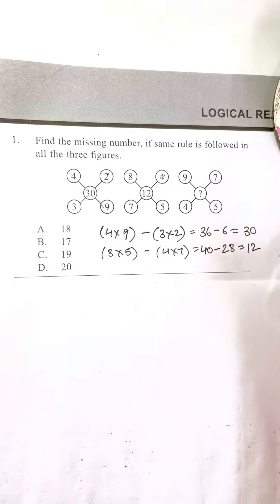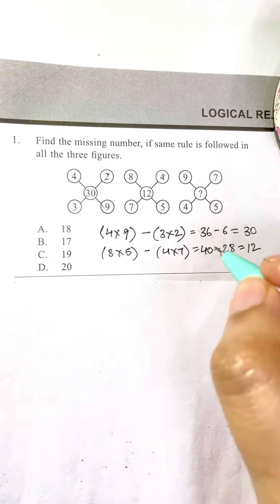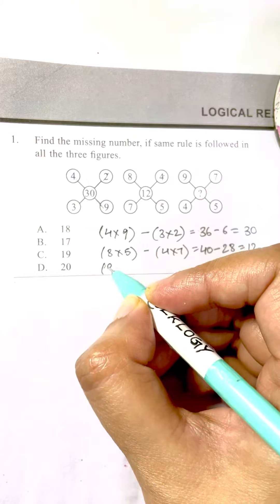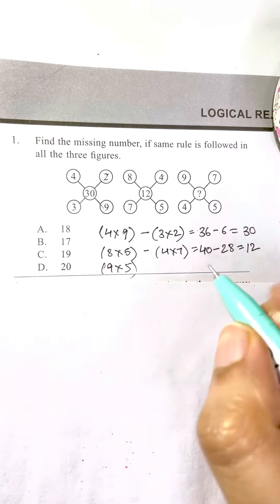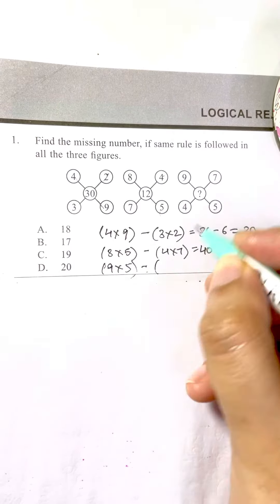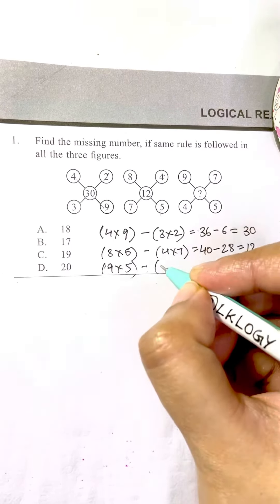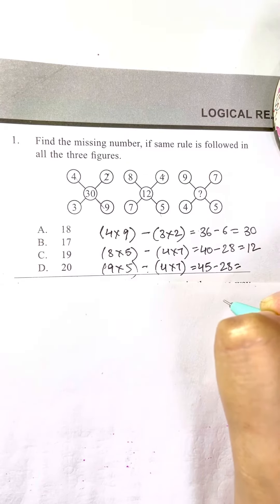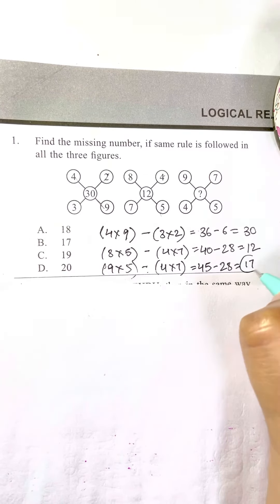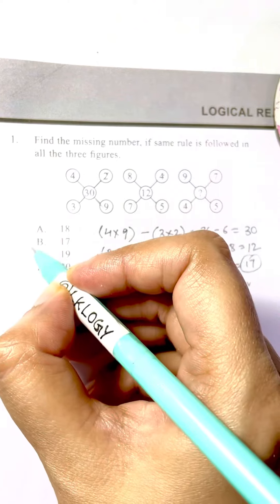Let's see for the third one. Nine times five, I'm going to have nine times five minus four times seven. So 45 minus 28 is equal to 17. So that's my answer, choice B.